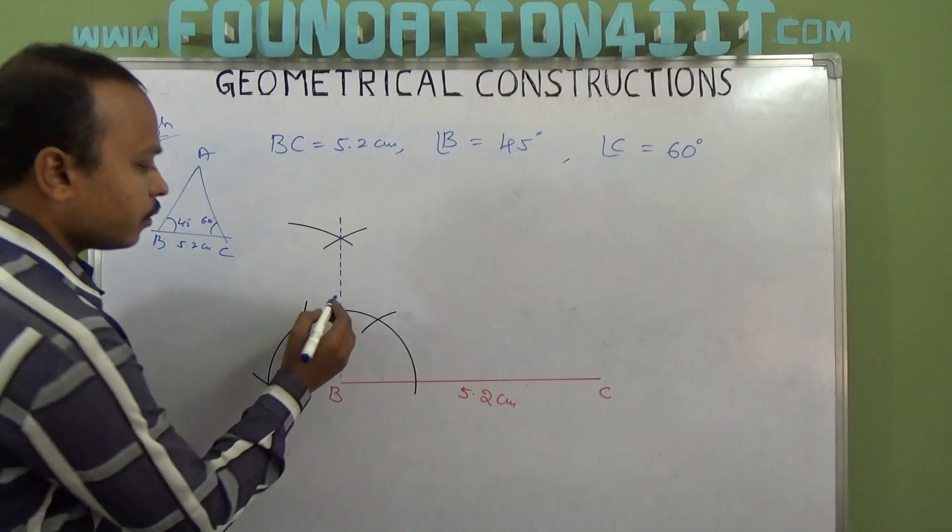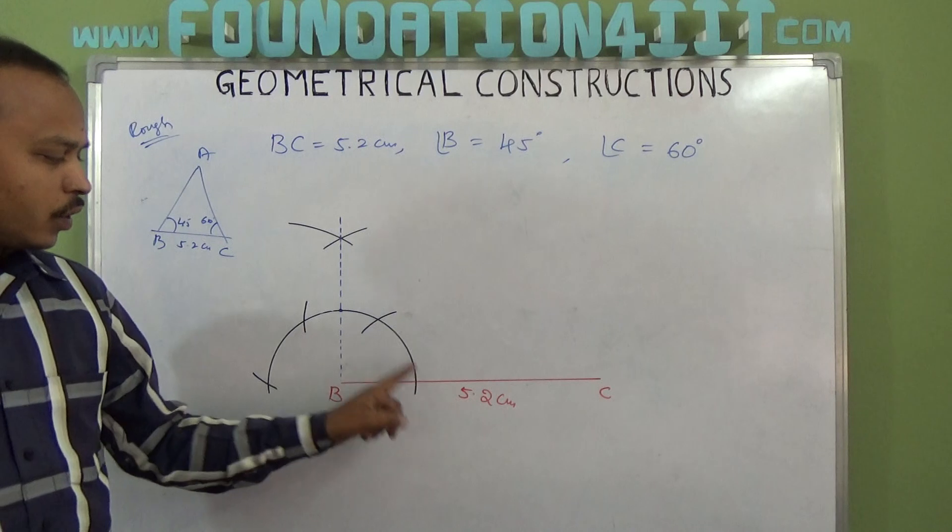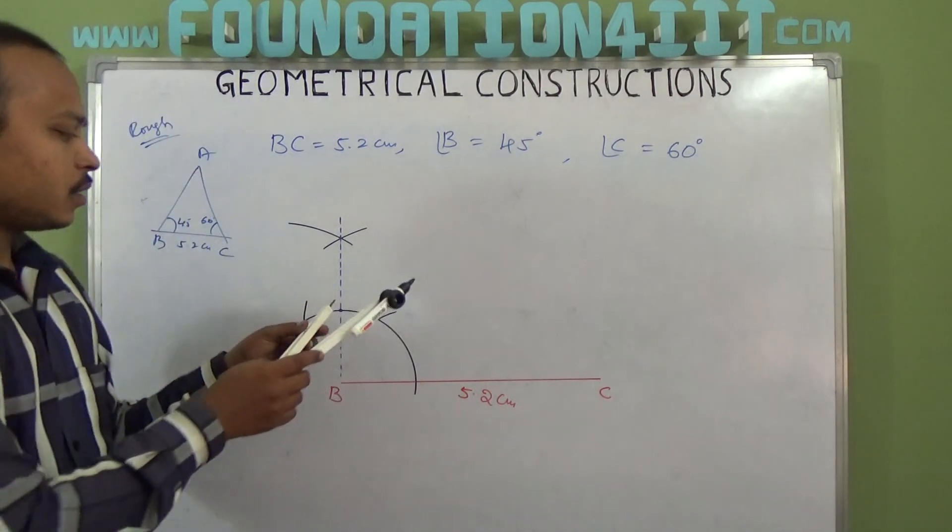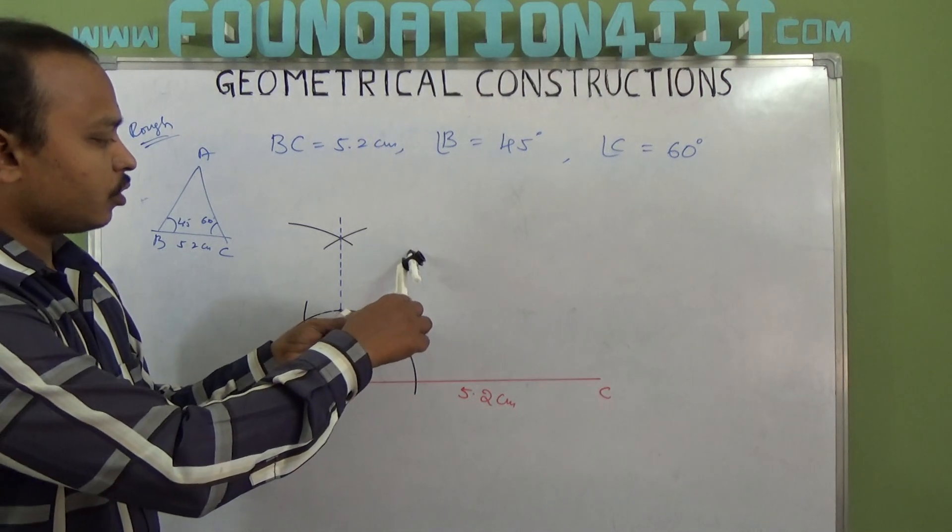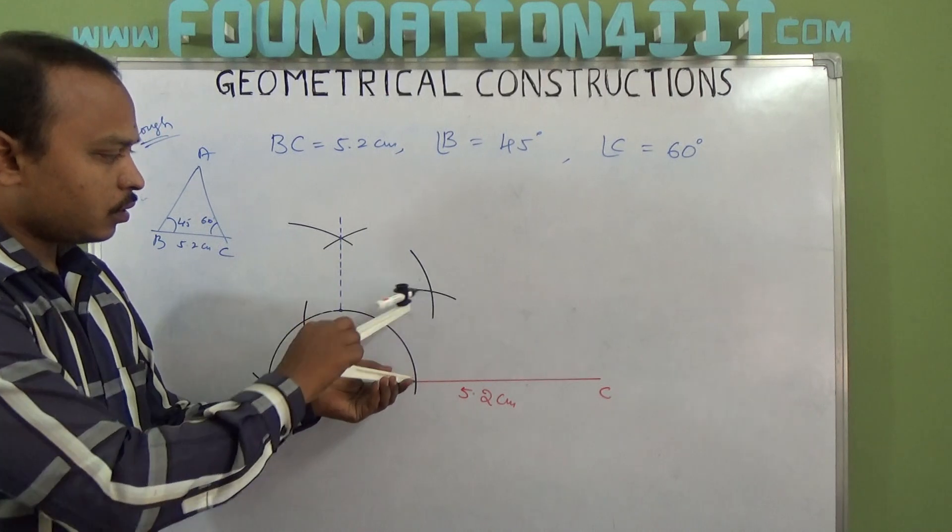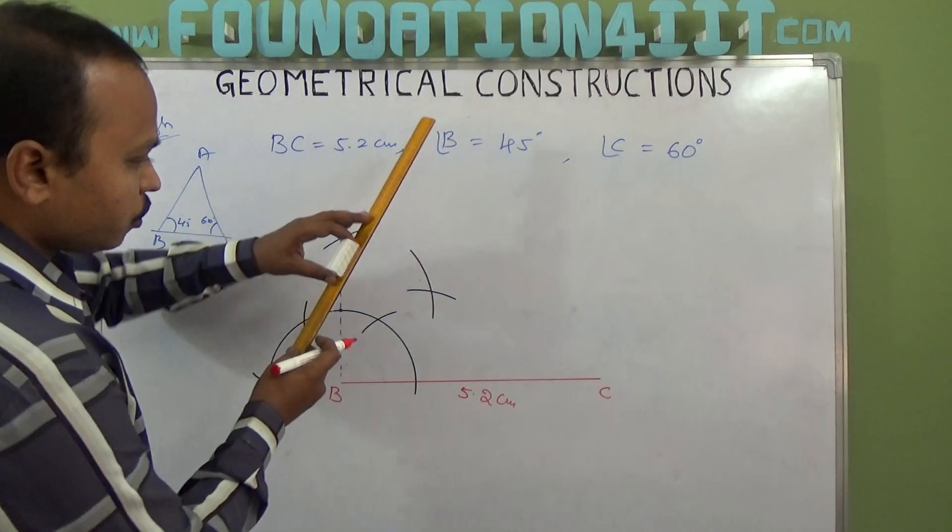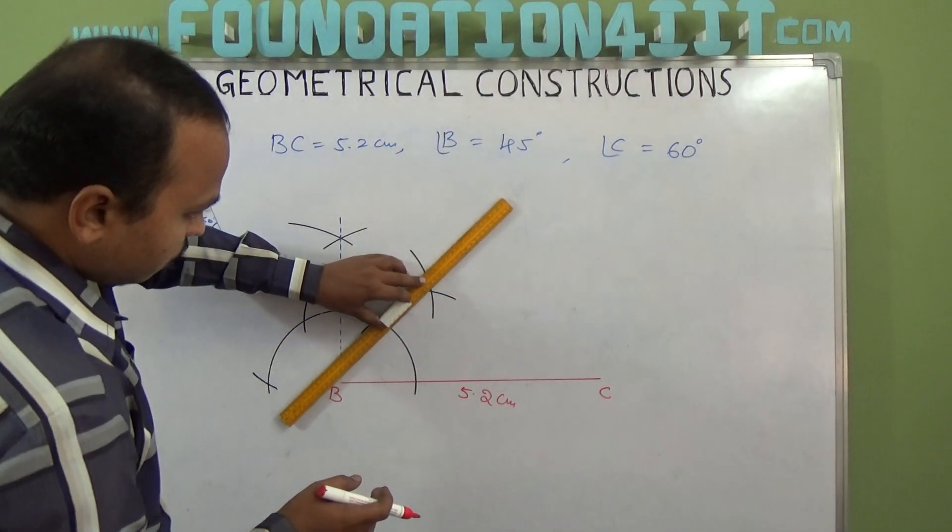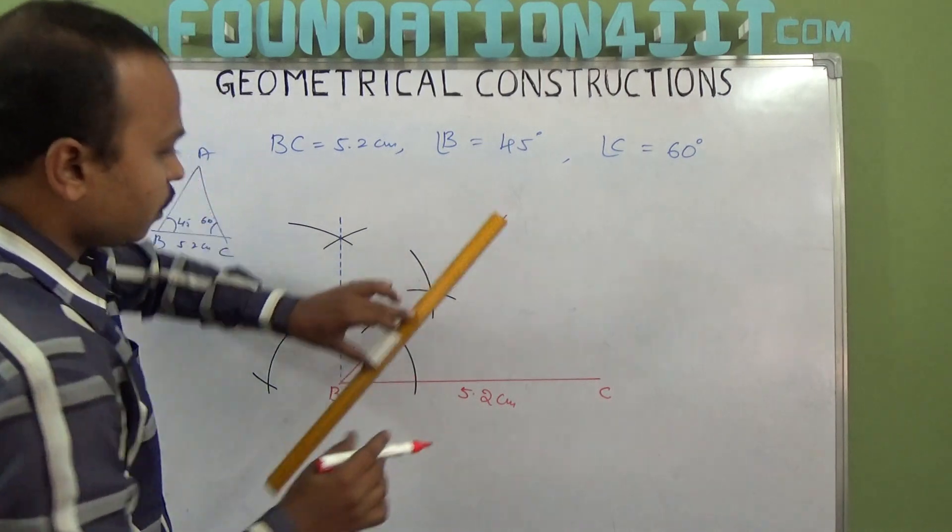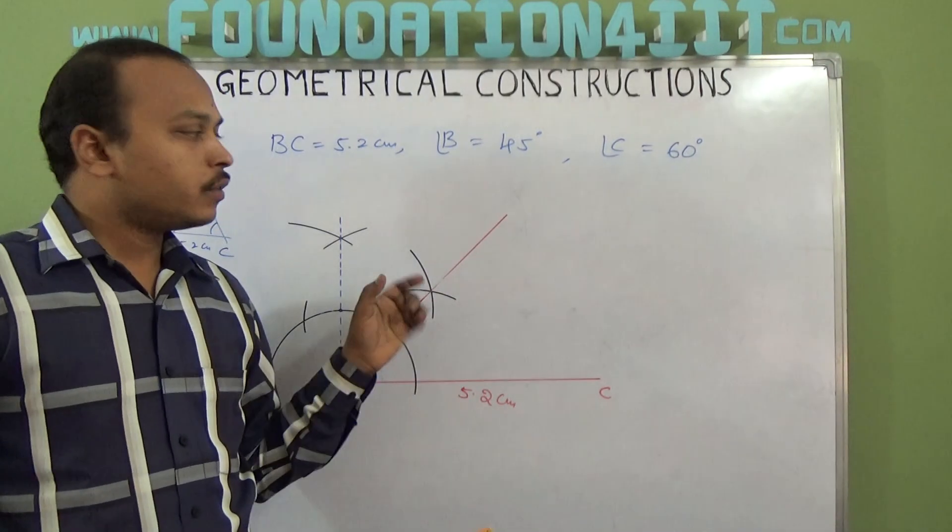Where these arcs meet is the 90 degree point. Now we bisect between 0 and 90. Take a reasonable radius and draw an arc from the 90 degree point. Again from 0, draw an arc. Now join these. This is the 45 degree angle. Extend this line.